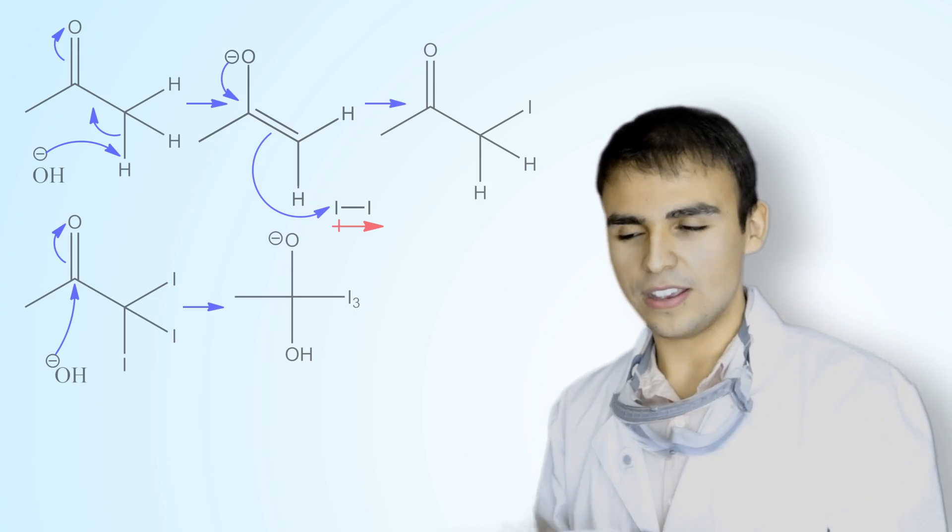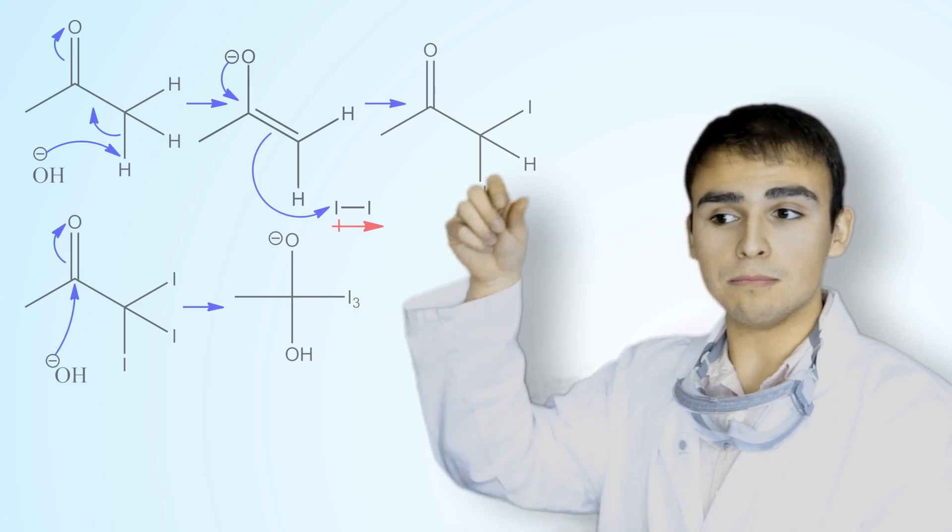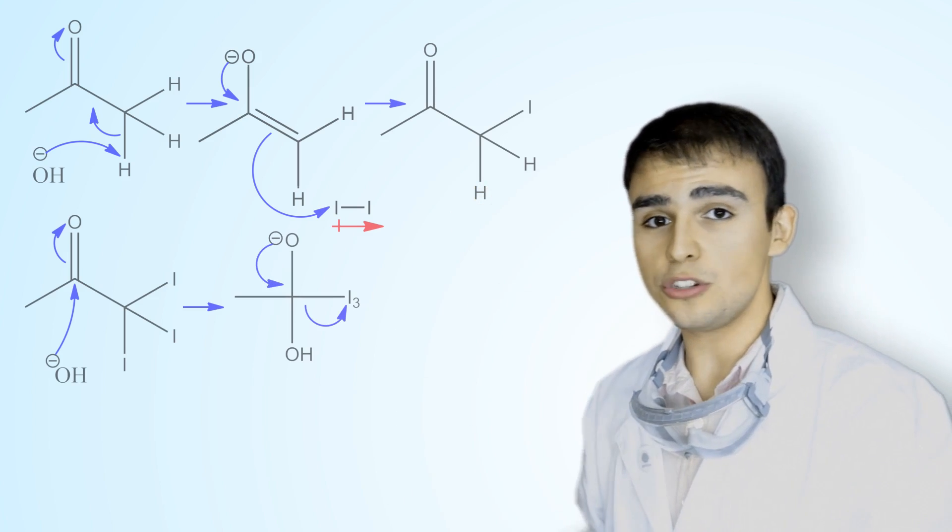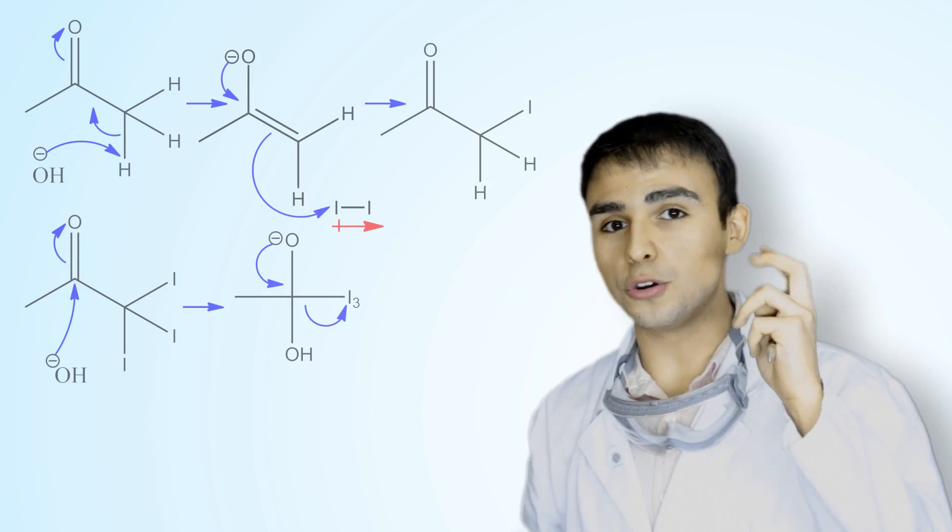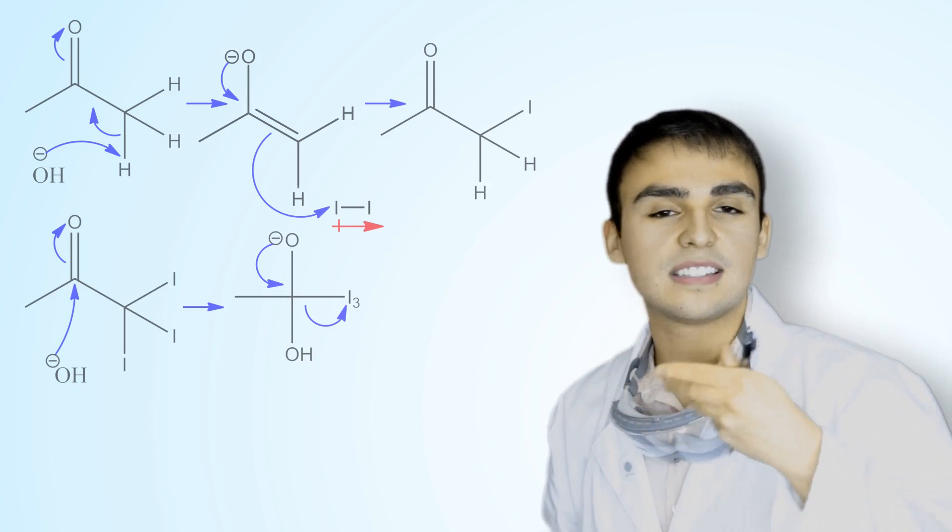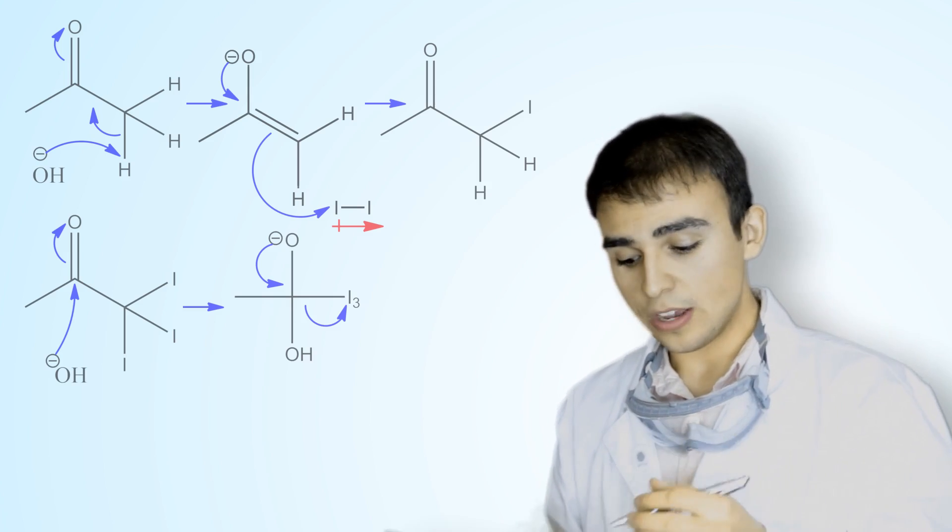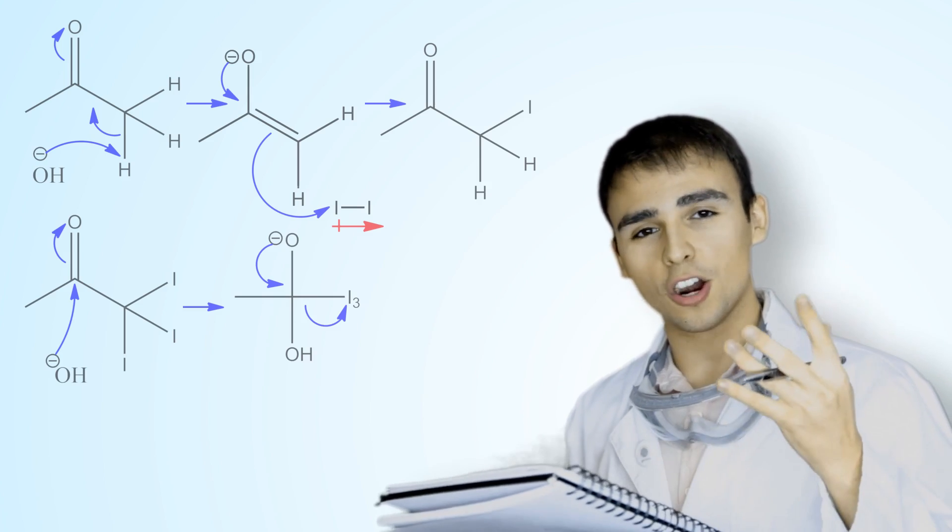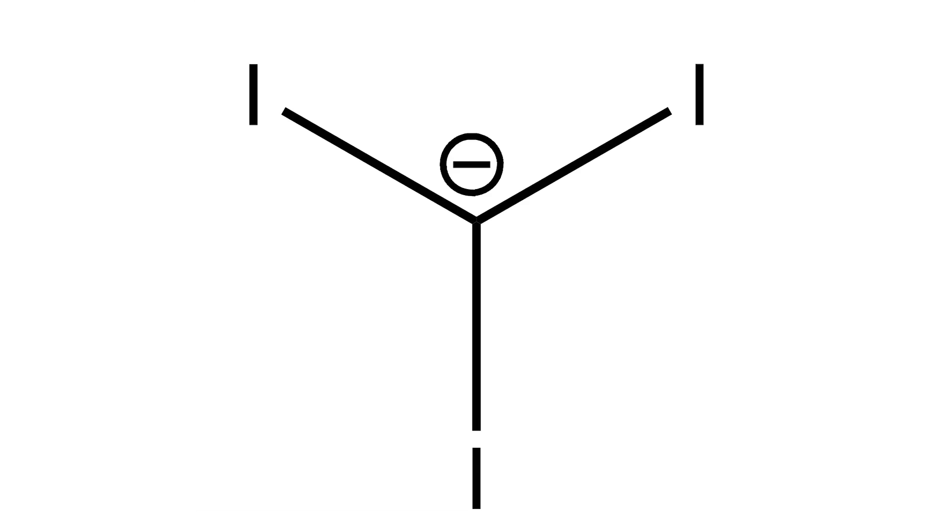So the electron density is going to move down, kicking off a good leaving group, something that can stabilize that negative charge, which in our case is the carbon triiodide anion. That will produce a carboxylic acid.